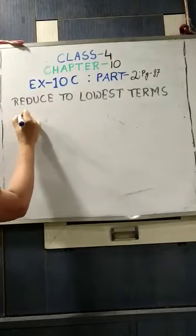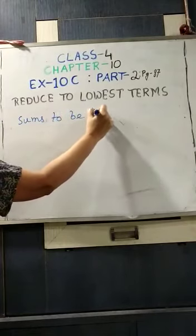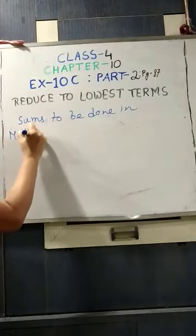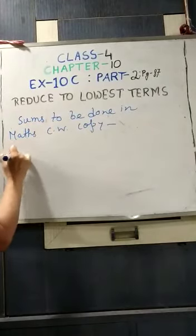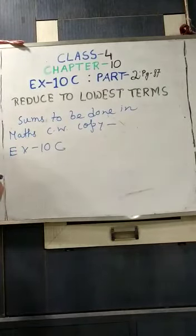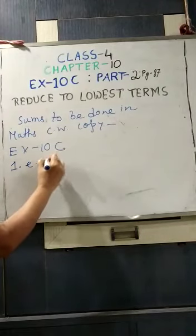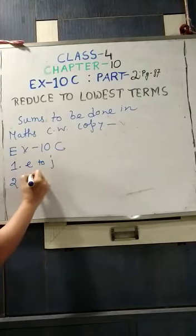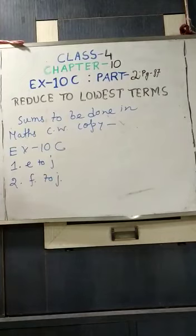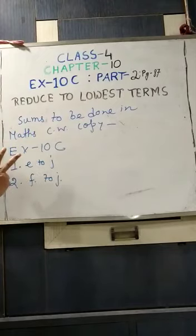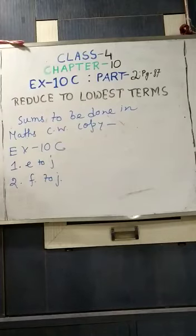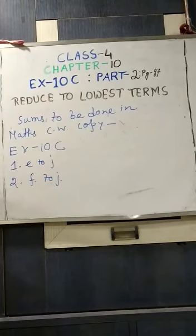Now students, the sums to be done in your maths class copy are Exercise 10C Part 1 and Part 2. You will also need to learn the tables and the divisibility rules of the numbers. Today up to this much — in our next class we will continue with adding and subtracting like fractions. Namaste students.